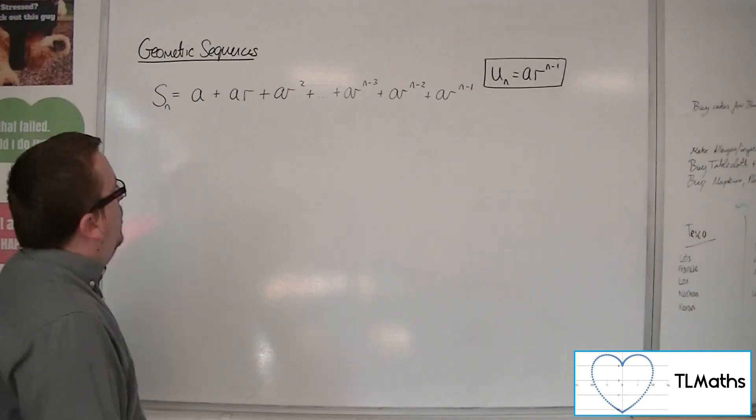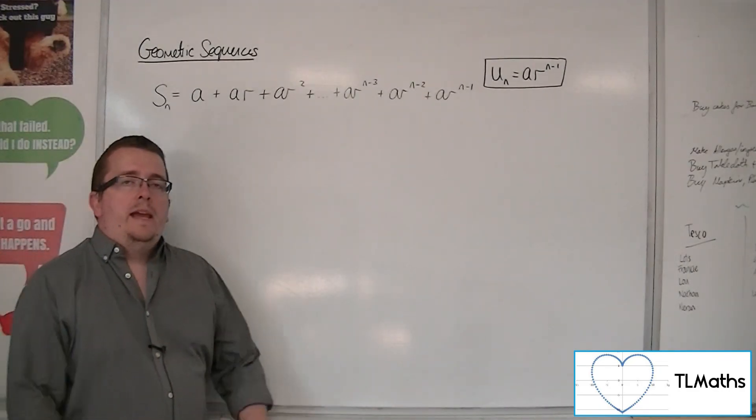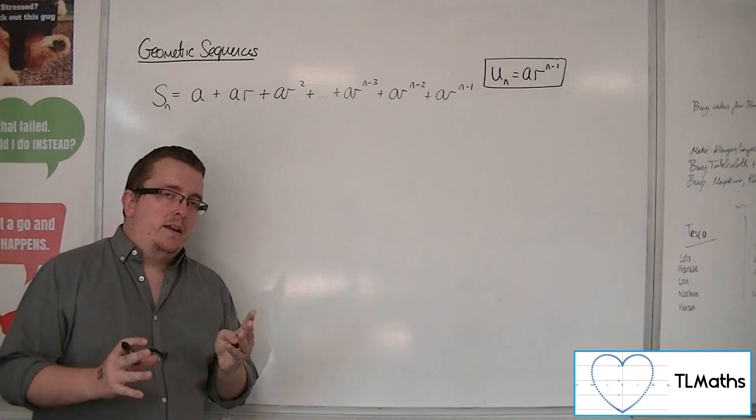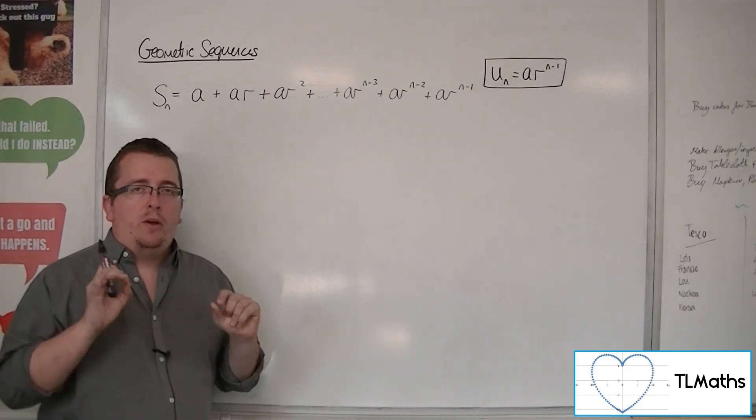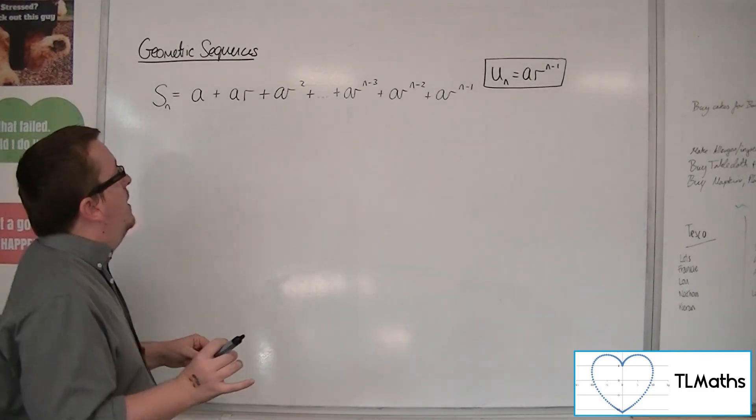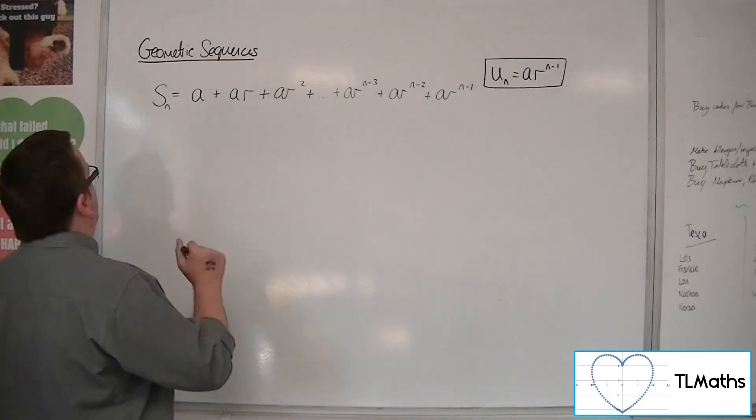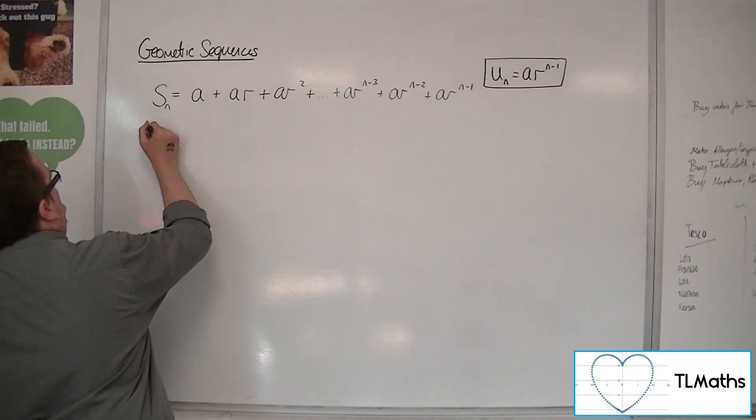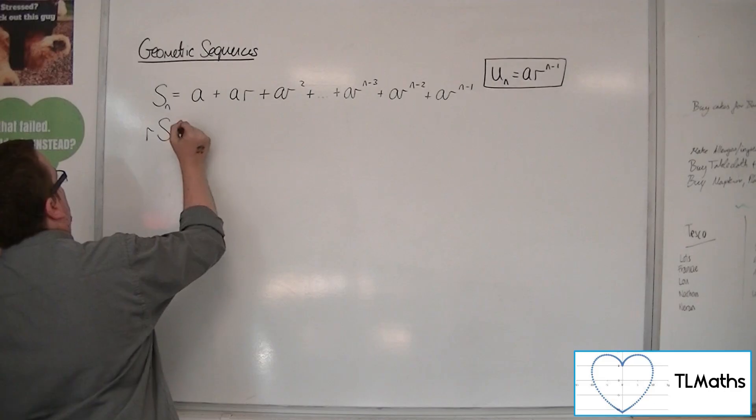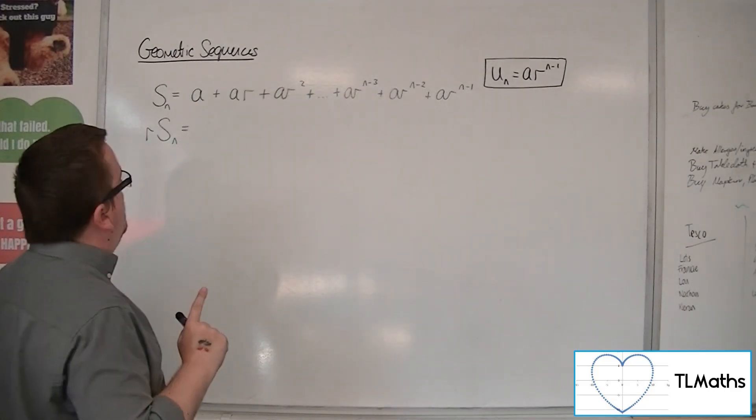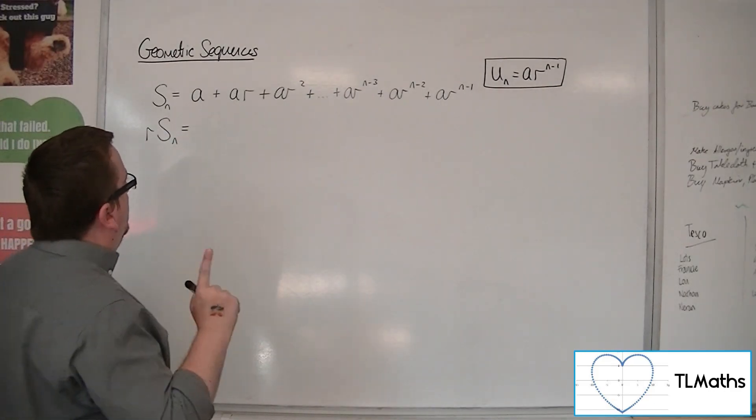What we do at this point is we write down the same sequence again, but multiplying both sides of the equation by r. This will become a little bit clearer as to why we would do this in a moment.